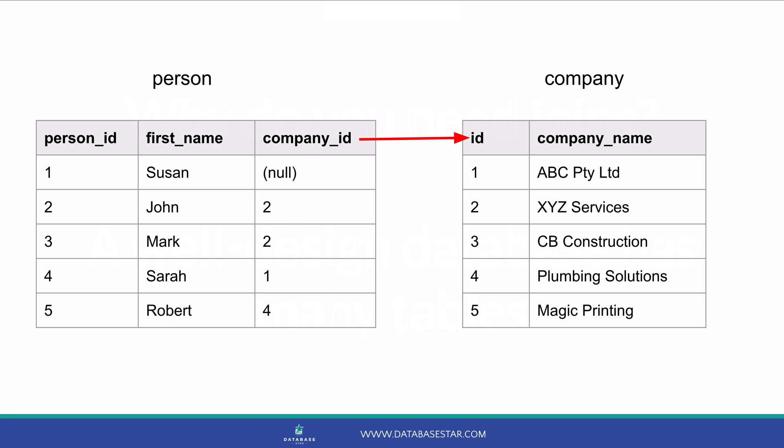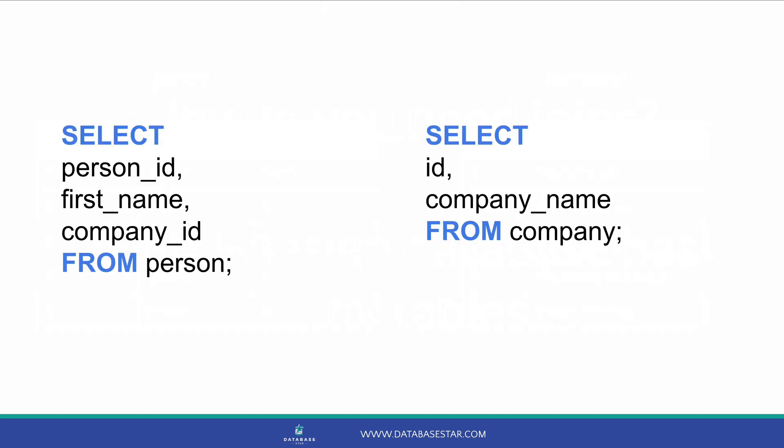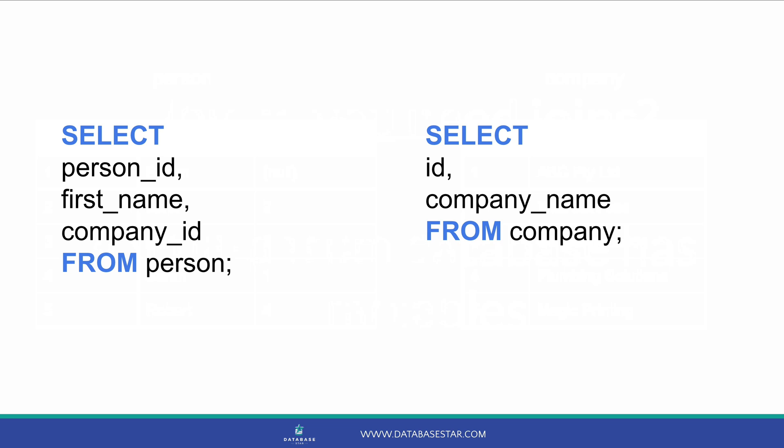This data is in two tables. We can select from these tables individually, but we would have two different queries and two different results. What if we want the data in one result — a list of people's names and the company names they are related to? We can use a join. We start by writing the select query, then some columns from the person table, we specify the person table, then we need to specify the second table. Before the second table, we specify a join.